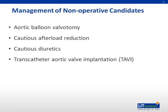Transcatheter aortic valve implantation involves placement of a replacement aortic valve either via a retrograde approach up the aorta or a transapical approach through the left ventricle. These techniques are showing promise and will likely eventually be a comparable option to surgery in some patient groups, or a viable option if the patient is not a surgical candidate due to comorbidity.